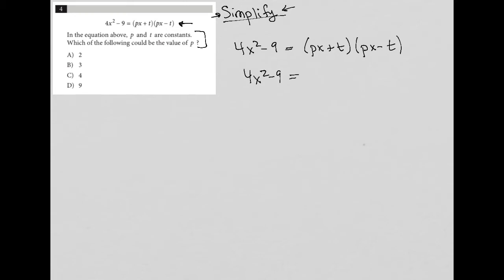I keep 4x squared minus 9 the same and then I foil the right hand side of this. So first times first would be p squared x squared and then outers px times negative t would be a negative pxt and inners t times px would be a positive pxt.